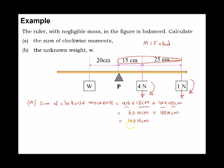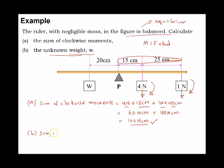That is the sum of clockwise moments for part (a), which is 100 Ncm. For part (b), to find the unknown weight W, since the figure is balanced the object must be in equilibrium. Therefore, the sum of clockwise moments (CW) must equal the sum of anti-clockwise moments (ACW).